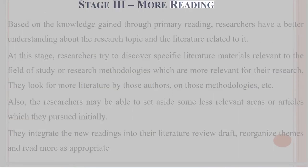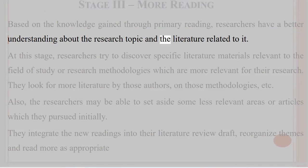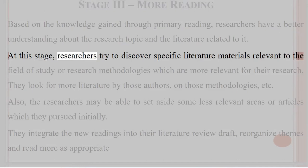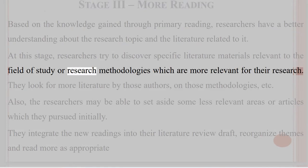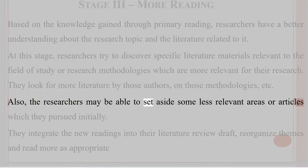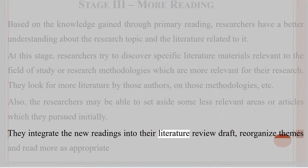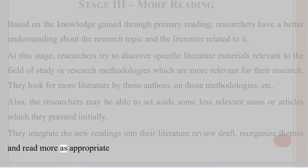Stage 3: More Reading. Based on the knowledge gained through primary reading, researchers have a better understanding about the research topic and the literature related to it. At this stage, researchers try to discover specific literature materials relevant to the field of study or research methodologies which are more relevant for their research. They look for more literature by those authors on those methodologies. Also, researchers may set aside some less relevant articles, integrate new readings into their literature review draft, reorganize themes, and read more as appropriate.